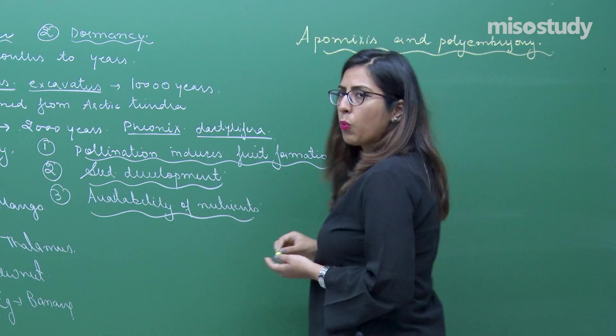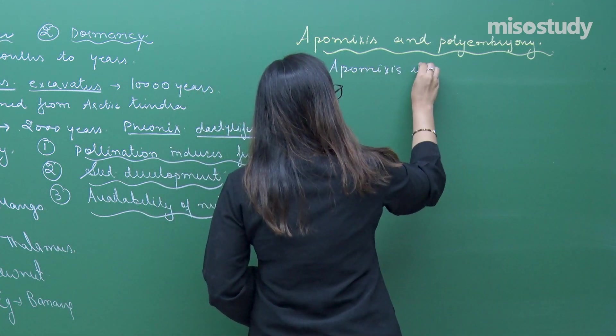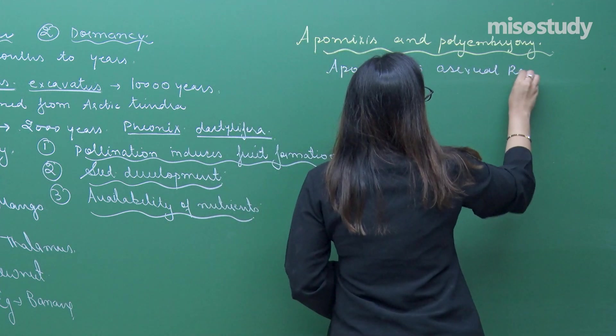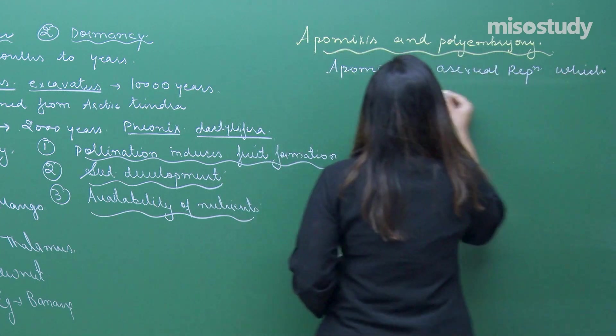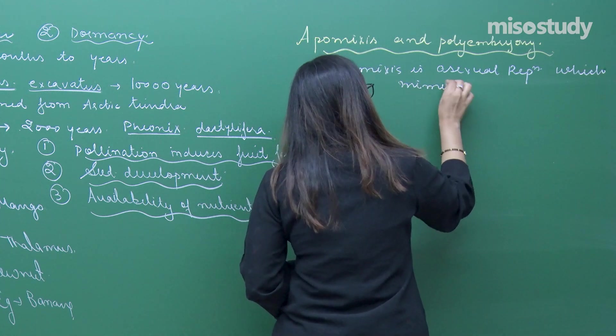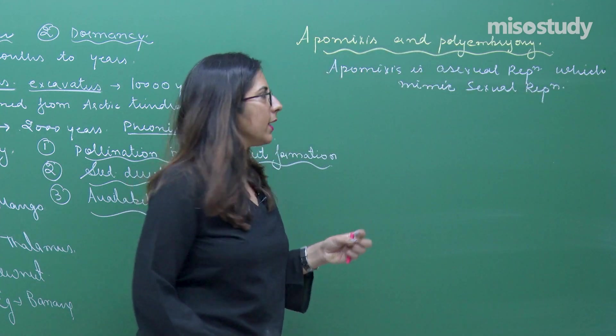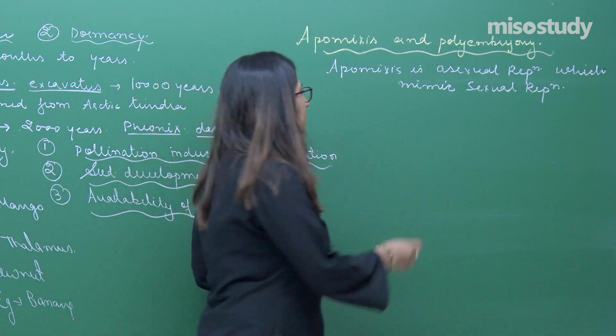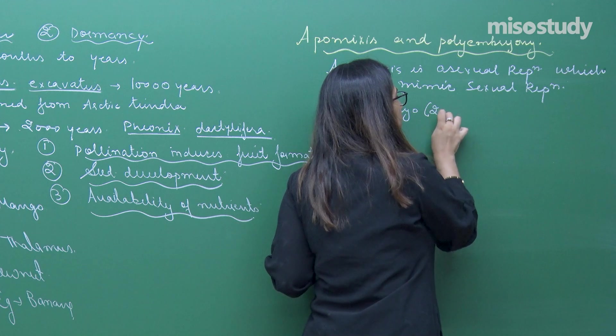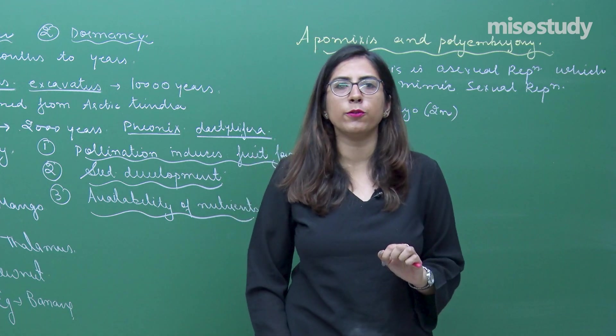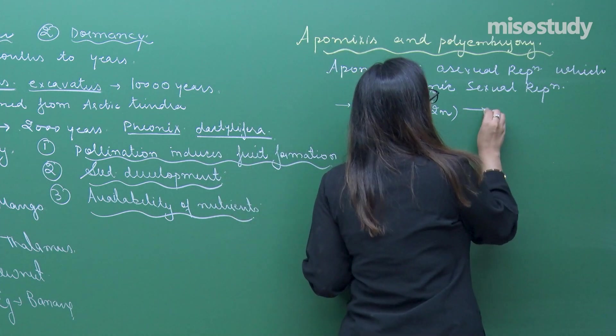What is apomixis? Apomixis is asexual reproduction which mimics sexual reproduction. In this case there is formation of embryo. Embryo formation is there and this embryo is also diploid. If it is diploid, that means it is formed from two different type of cells, but actually it is not the case.